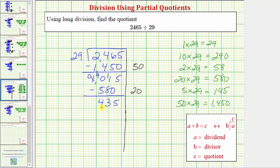Repeating the process, we need to determine a certain number of 29s that are in 435. Well, because 290 is less than 435, and 290 is equal to 10 times 29, we know there's at least 10 29s in 435.